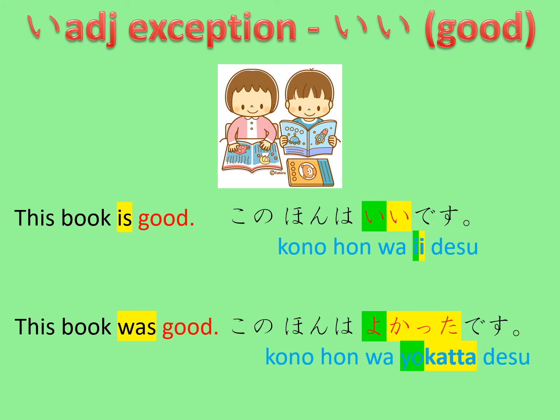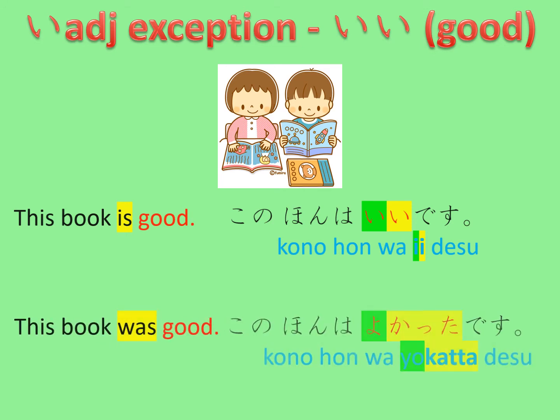Having said that, the i-adjective ii, which means good, is slightly different from other i-adjectives. The opening -i also changes to yo- when the ending -i becomes -katta. So 'this book is good' is 'kono hon wa ii desu,' but if you want to change that into 'this book was good,' you need to say 'kono hon wa yokatta desu.'